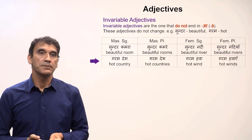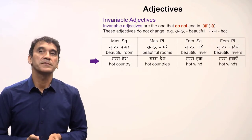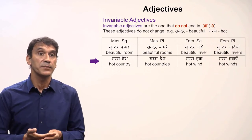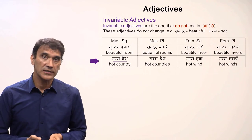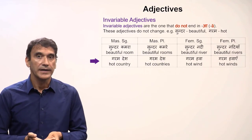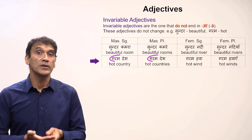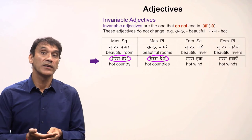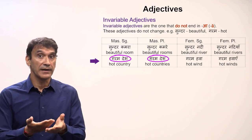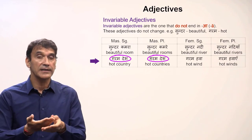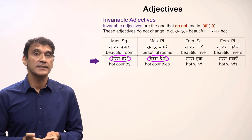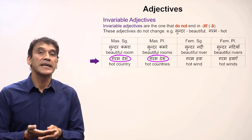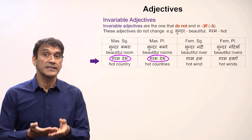Let's take one more example: 'garam' (hot). Since the adjective 'garam' does not end in -a, it does not change according to number or gender. It stays the same: 'garam desh' (hot country), 'garam desh' (hot countries). Interestingly, in this example both the adjective and the noun do not change in number, so singular and plural forms are the same. However, in a sentence, through the verb, the context will be clearly expressed — whether it is singular or plural.